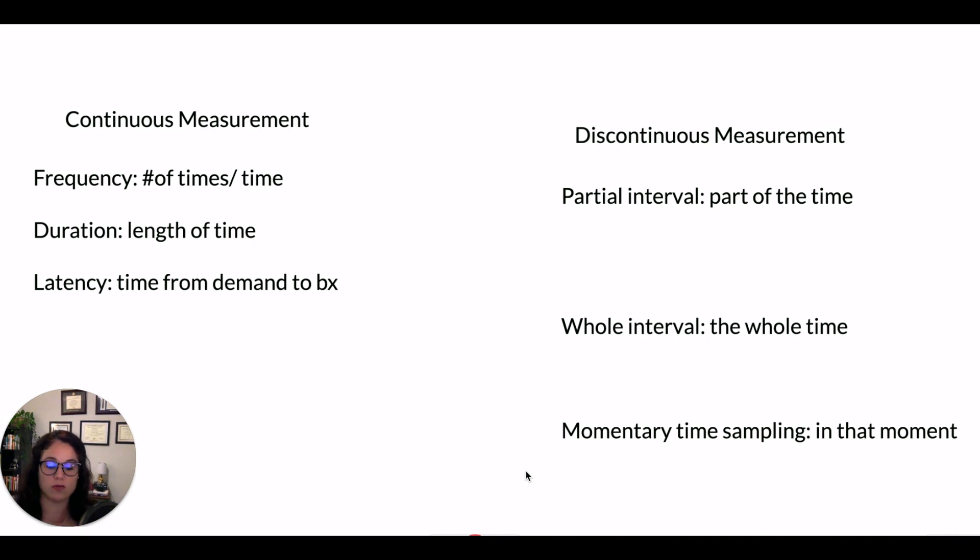Duration is the length of time. So you start a timer, you observe the behavior for happening. As soon as it stops, you stop the timer. It's important to have clear operational definitions for any of these measurement procedures. With duration, you may have to describe the onset and offset of the behavior to make sure your time and duration is accurate.